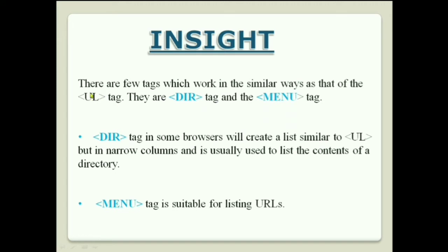There are also tags that work similarly to the UL tag: the DIR tag (directory tag) and the MENU tag. The DIR tag creates a list similar to UL but in narrow columns and is usually used to list the contents of a directory. The MENU tag is suitable for listing URLs.